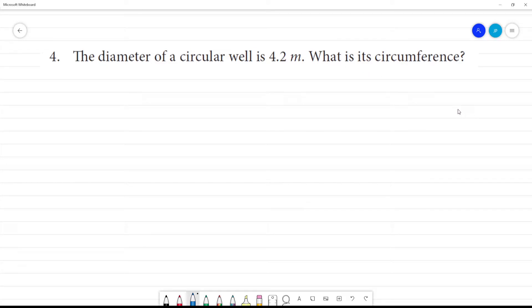The diameter of a circular well. Well is a circular structure. The diameter is 4.2 meter. This is 4.2 meter diameter.